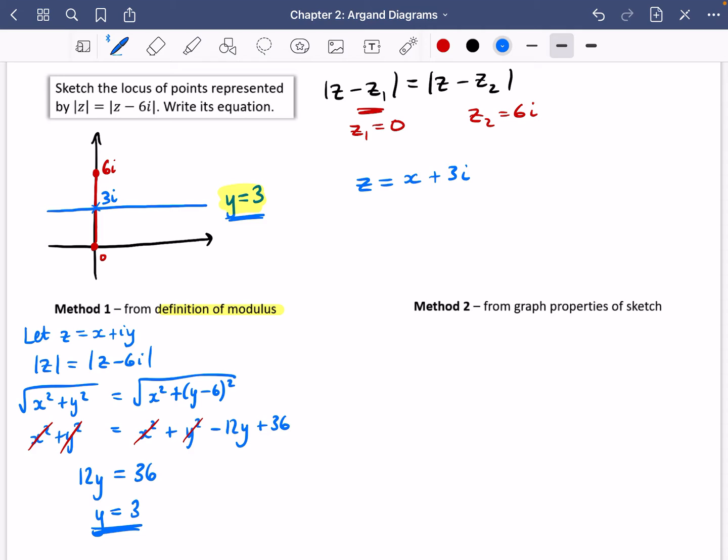Method 2, we've kind of already done. Just by having a look at the sketch of the graph, we can clearly see that it's a horizontal line that would always have a Y coordinate 3. So we can just go straight in and just say that Y is equal to 3. So this is our Cartesian. This is a complex number that would satisfy this particular property that we've got here.